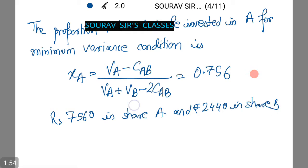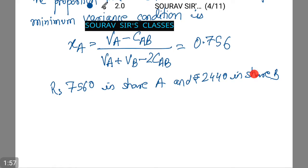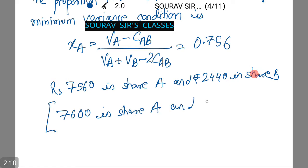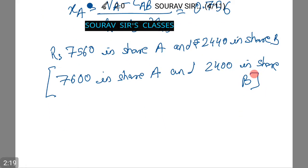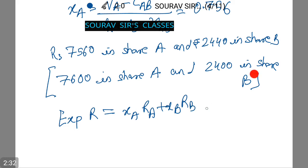Since infinite divisibility of holdings is not allowed, the investor will have to invest rupees 7,600 in share A and rupees 2,400 in share B. We now calculate the expected return of this portfolio: EXPR equals XA times RA plus XB times RB, which upon substituting values from the table gives 20.48%.